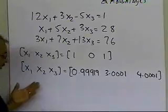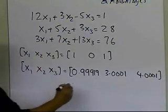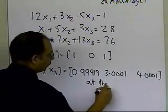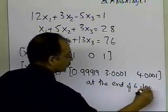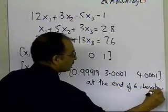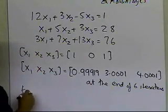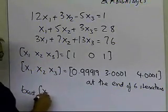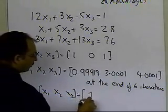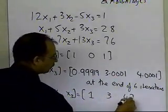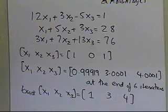And it was converging because we know, so this is at the end of the sixth iteration, only six iterations. So it converges pretty fast, because we know just from looking at it that the exact solution of this particular set of equations, x1, x2, x3, is nothing but 1, 3, 4. So it converges pretty fast.